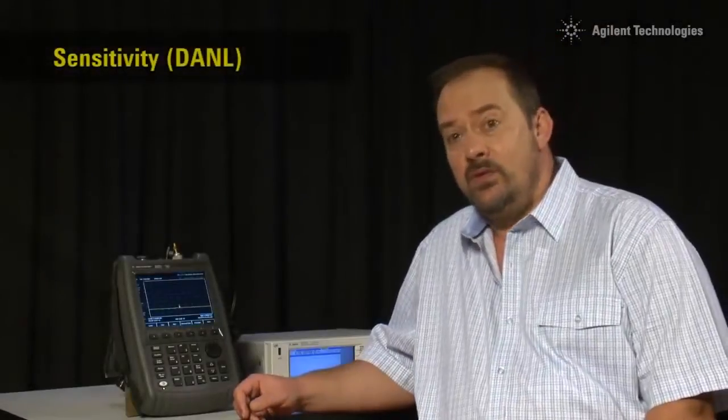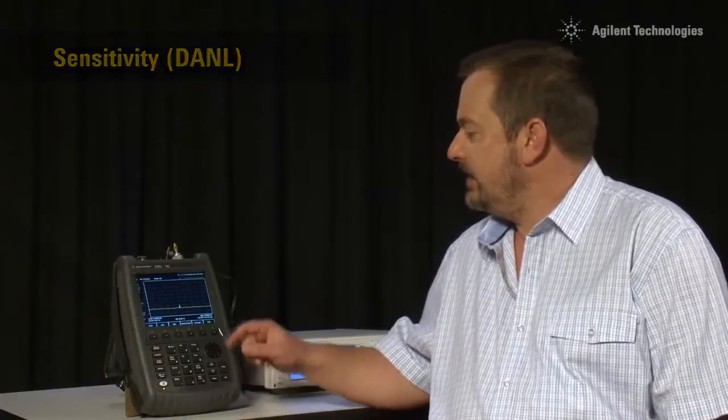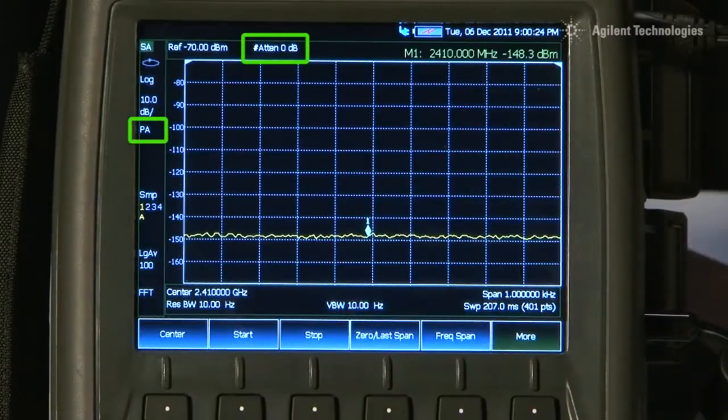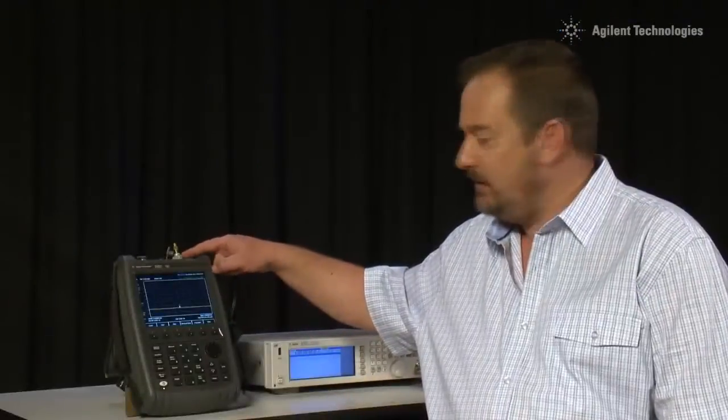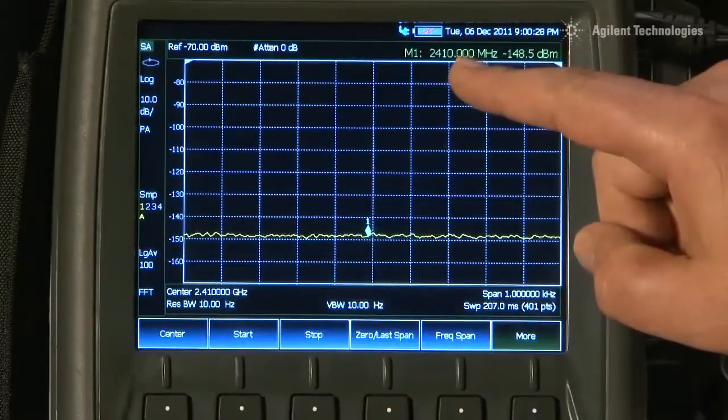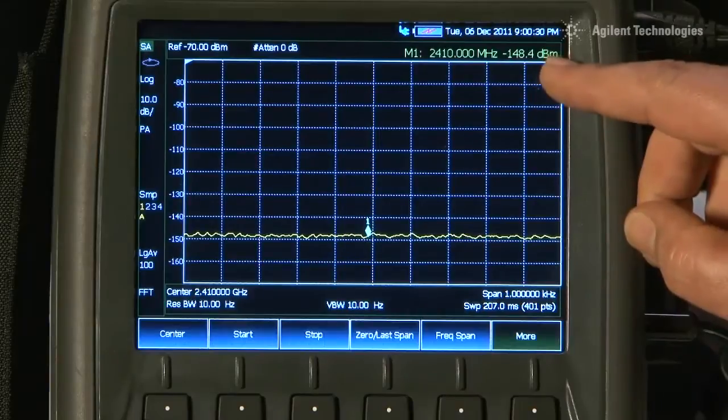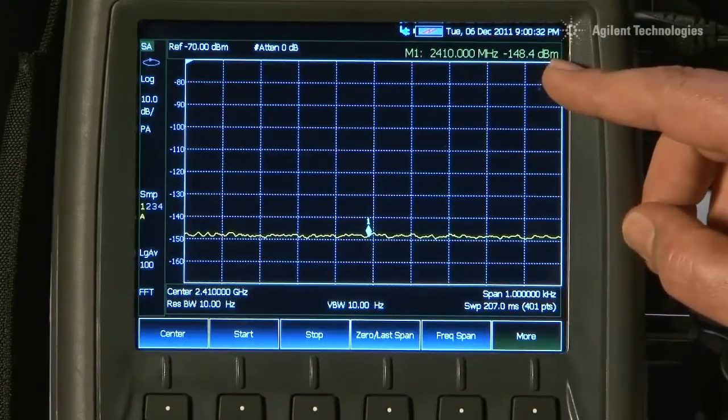A key specification of all spectrum analyzers is their sensitivity, or ability to detect weak signals. Here you can see with the attenuation set to zero, the pre-amplifier turned on and the input terminated with a 50 ohm load, that at about 2.4 GHz, it is achieving a noise floor of around minus 148 dBm.